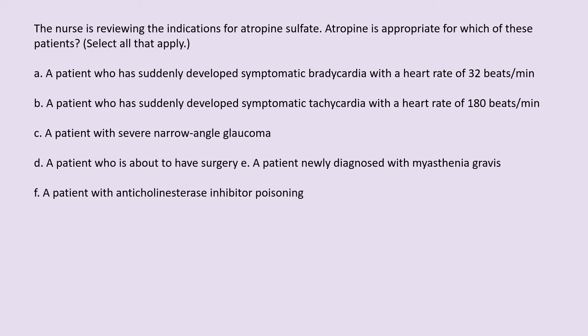The nurse is reviewing the indications for atropine sulfate. Atropine is appropriate for which of these patients? Select all that apply. A. A patient who has suddenly developed symptomatic bradycardia with a heart rate of 32 beats per minute. B. A patient who has suddenly developed symptomatic tachycardia with a heart rate of 180 beats per minute. C. A patient with severe narrow-angle glaucoma. D. A patient who is about to have surgery. E. A patient newly diagnosed with myasthenia gravis. F. A patient with anticholinesterase inhibitor poisoning.